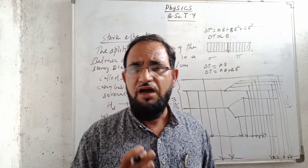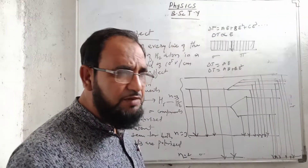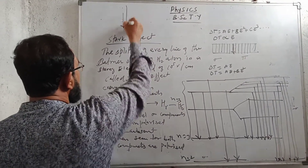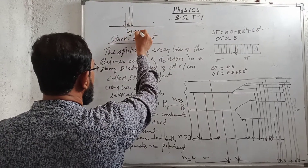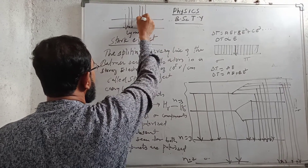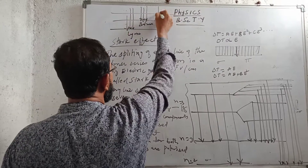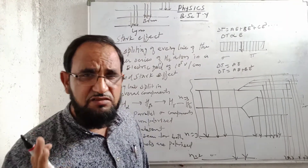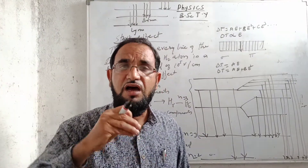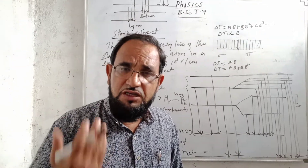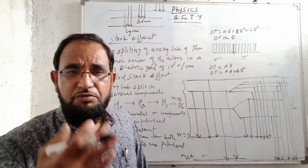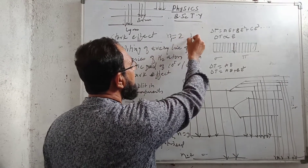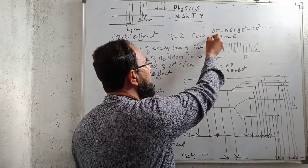We know about the hydrogen spectrum: when an electron jumps from a higher orbit to the first orbit, there is the Lyman series. When an electron jumps to the second orbit, there is the Balmer series. Then there is the Paschen series, Fund series, and Brackett series in the hydrogen atom. The Balmer series — the visible series — occurs when the electron jumps from a higher orbit to the second orbit, i.e., n1 = 2 and n2 = 3, 4, 5, and so on.